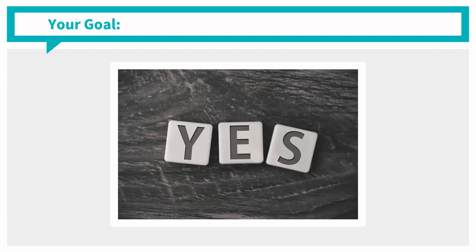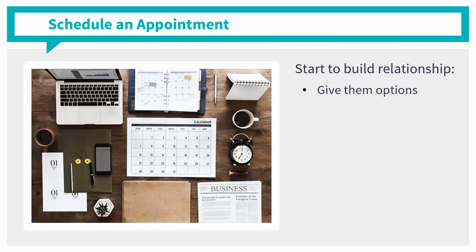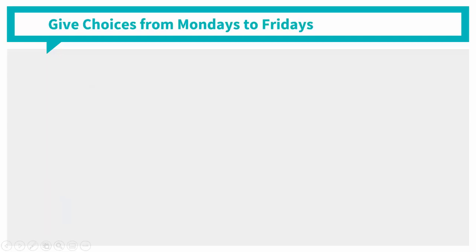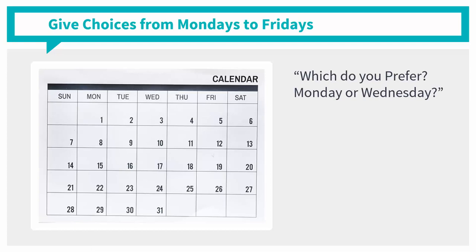You will probably get a no from asking that directly, unless you have built a really good relationship with that prospect. If you're just starting to build a relationship, give them options that lead to where you want them to choose from. Give choices from Monday to Friday. You may ask, 'Which do you prefer, Monday or Wednesday?' Mondays could be busy for some people because it's the start of their week, so give your prospect a second option as your ideal day to meet up. They probably won't choose Monday and will go for the second option instead.